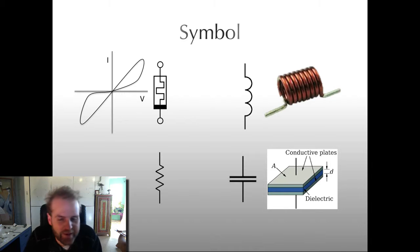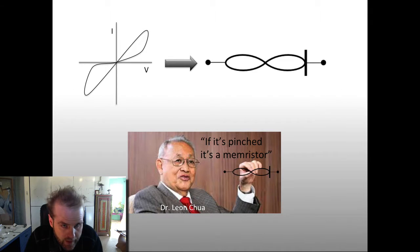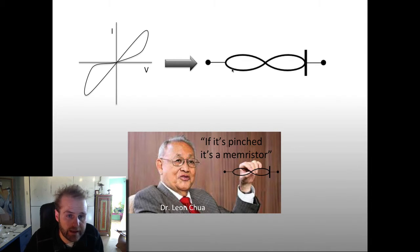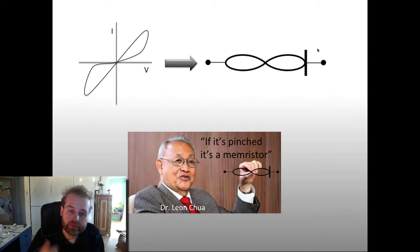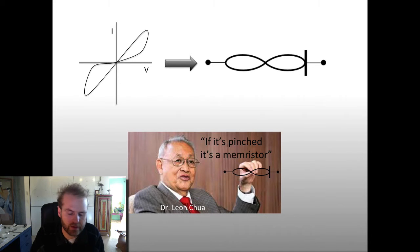And then you have the Memristor symbol here. It's not very easy to draw, and it's not symbolically representative. This is why we use this symbol, especially whenever I have to draw it on the whiteboard or the chalkboard. The reason for it is that it is a pinched hysteresis loop, and the bar — I'll talk about that in a second — but the main thing is that it's a pinched hysteresis loop, sort of like an infinity symbol.